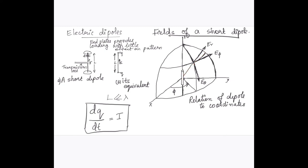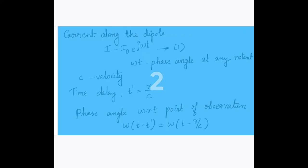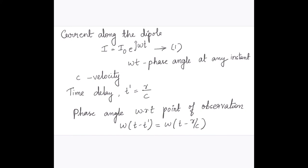Usually the current can be represented by the formula I is equal to I0 into e raise to j omega T. Here omega T is the phase angle at any instant and C is the velocity. The time delay T dash can be written as distance by velocity. The phase angle with respect to delay, that will become omega into T minus T dash is equal to omega of T minus R by C.